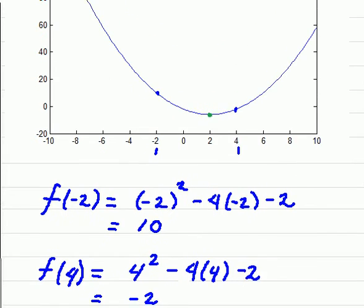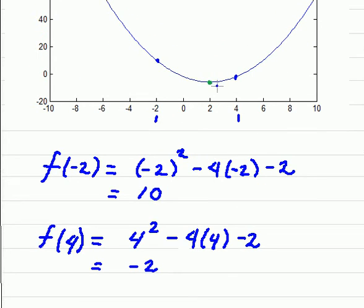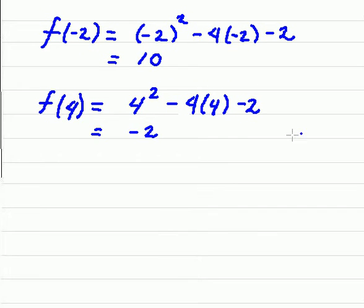Now we want to find the y value of this point right here, which is the minimum of the graph. So we're going to need to use some calculus. We're going to take the derivative, so f prime of x is 2x minus 4.